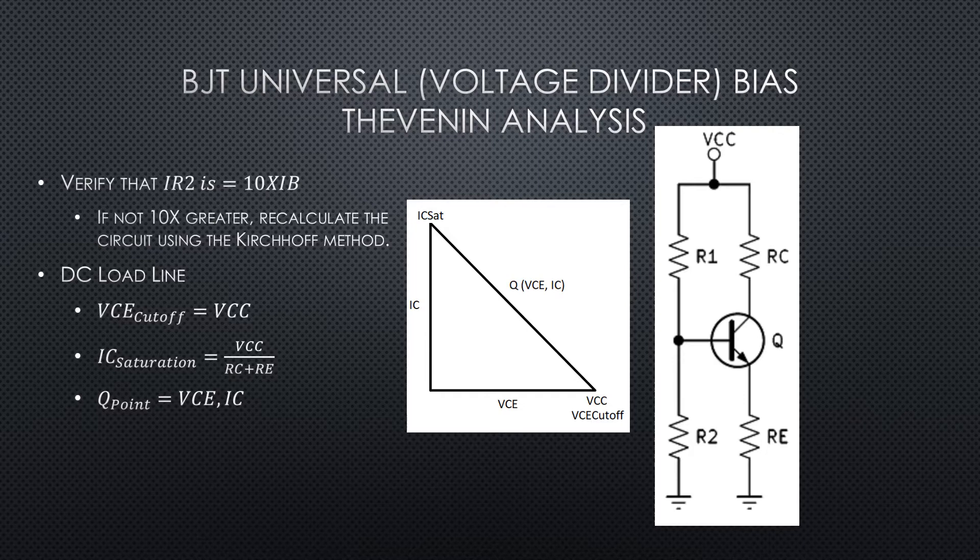And what that means is if we've got a lot of current flowing through R1 and R2, small changes in IB aren't going to make any difference on the circuit. It's going to be nice and stable. The problem is if our IR2 is not 10 times bigger than our IB, we need to go back and analyze the circuit with the Kirchhoff method.